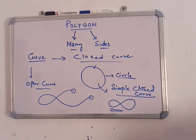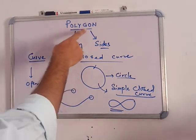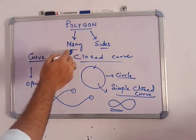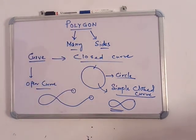Today we are going to discuss about polygons. So what is a polygon? Polygon means poly means many and gon means side. So polygon means many sides.